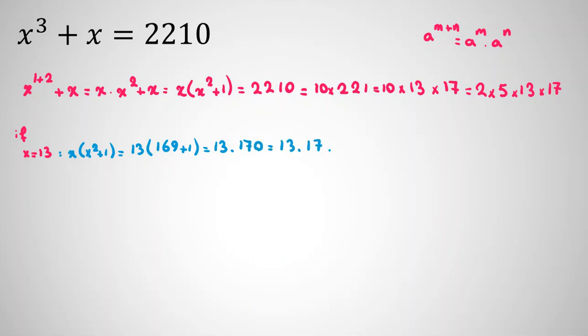This will be 13 times 17 times 10, which is 2 times 5, and it is exactly right. So x = 13 is one root.